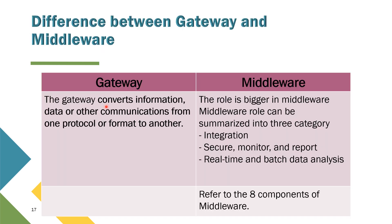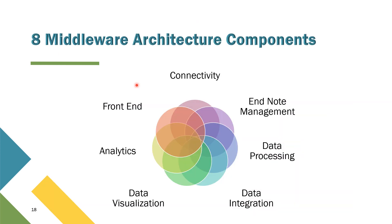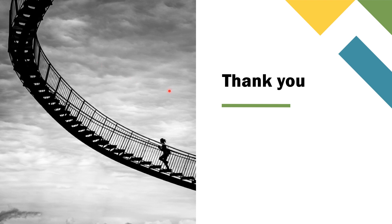For middleware, there will be a lot more roles — for example, integration, secure monitor and report, real-time and batch data analysis. We can also compare it with the eight components of middleware architecture: connectivity, front-end, analytics, data visualization, data integration, data processing, and end-node management. That's all for today. Thank you very much for listening. InsyaAllah we will see again in the next class. Assalamualaikum.